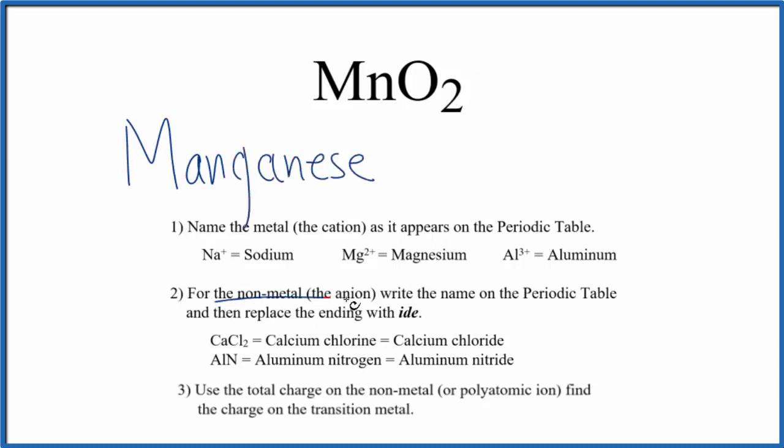Next, we write the name of the nonmetal also as it appears on the periodic table. Lowercase o. But then we replace the ending with ide. So we cross that out, ide.